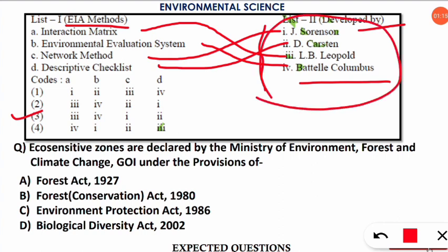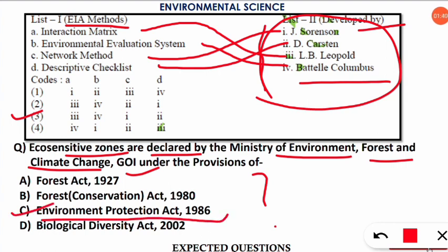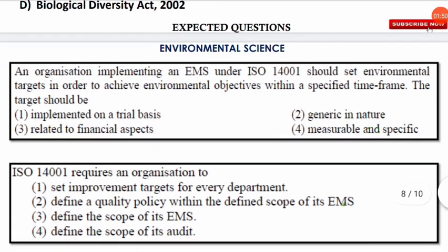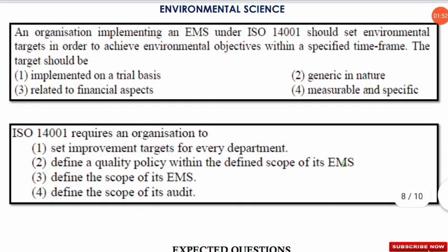The next question is: eco-sensitive zones are declared by the Ministry of Environment, Forest and Climate Change under the Government of India under which of the following provisions? The correct option is option number three — eco-sensitive zones are declared under the Environmental Protection Act of 1986 by MoEF CC, Government of India.